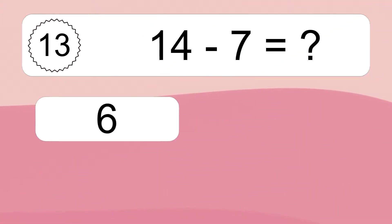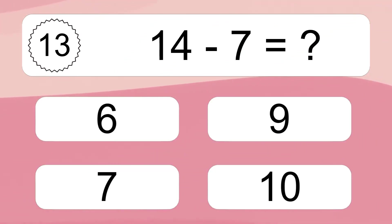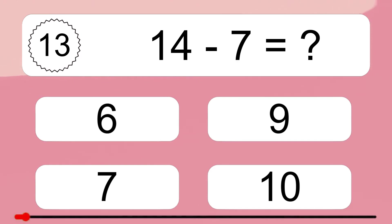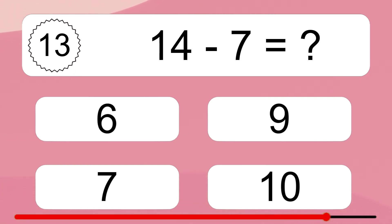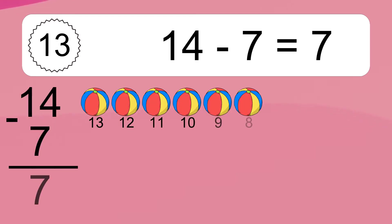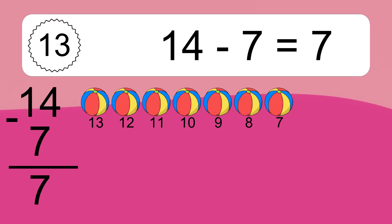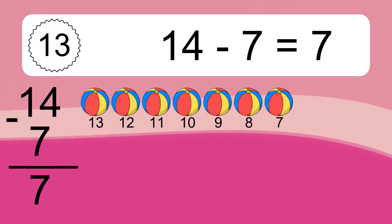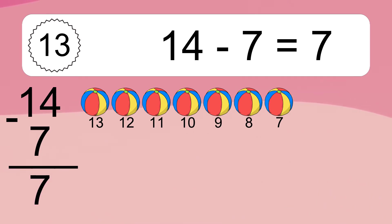14 minus 7 equals what? 4 minus 1 equals 7. Let's count it: 13, 12, 11, 10, 9, 8, 7.